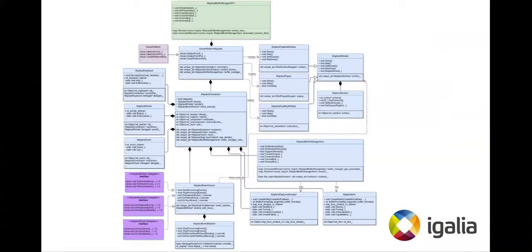Whenever Wayland sends keyboard, pointer, or touch events, they are forwarded to Wayland Event Source, which translates them to Chromium's internal type — the UI event — and decides which Wayland Window should receive the event based on native capture and focus events. Wayland Event Source is also the owner of Wayland Event Watcher, the class responsible for watching file descriptor readiness from the Wayland compositor so that events can be read from the pipe. Wayland Connection also owns Wayland ZWP Linux DMA-Buff, Wayland DRM, and Wayland Buffer Manager Host. The last class is responsible for managing Wayland buffers that can be backed by DMA-Buff or shared memory.